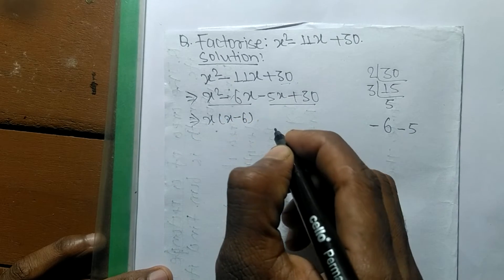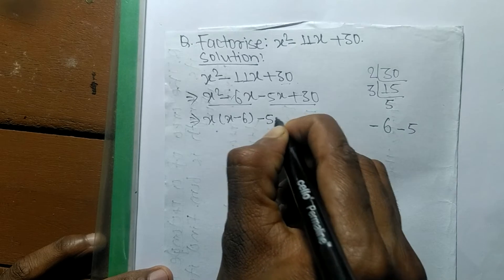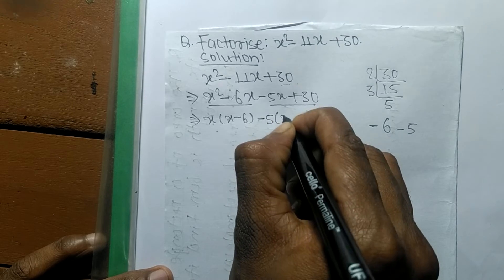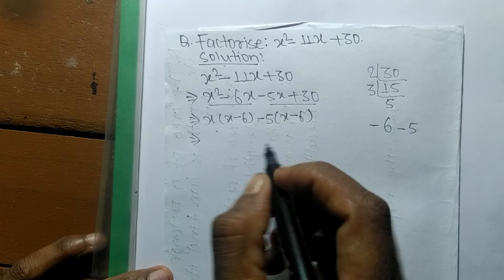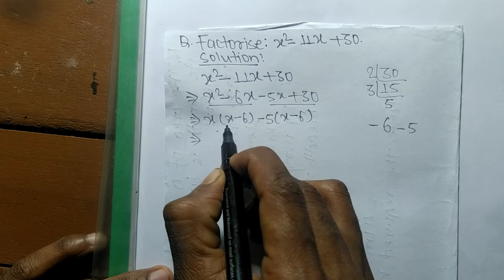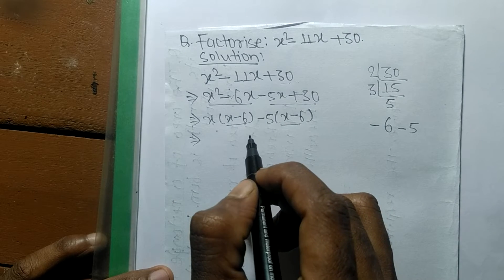In the second pair, the common factor is minus 5, so the remaining is x minus 6. In both pairs we have x minus 6.